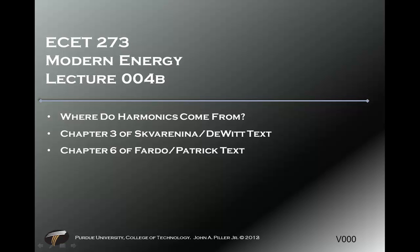This is Mr. Piller, ECET 273, Modern Energy, Lecture 4B. This is an additional lecture for the harmonic material — where do harmonics come from? — based on Chapter 3 of the Square Nine of DeWitt text and Chapter 6 of the Frodo-Patrick text.